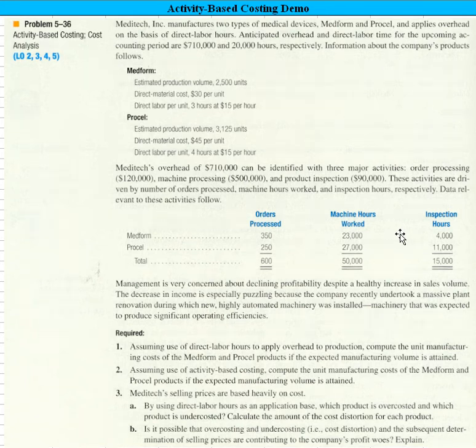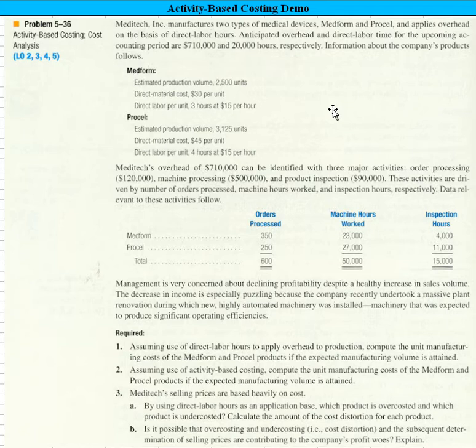Hi, everyone. Let's work through an activity-based costing demonstration. We'll use Problem 5-36, which you see on your screen as the basis. We're talking about the Meditech, Inc. company, and they make two medical devices, Medford and ProCal. First, we'll approach it from a traditional approach by applying overhead on the basis of direct labor hours. They tell us that the anticipated overhead and direct labor time is $710,000 and 20,000 hours. We also have some other information about our two products.